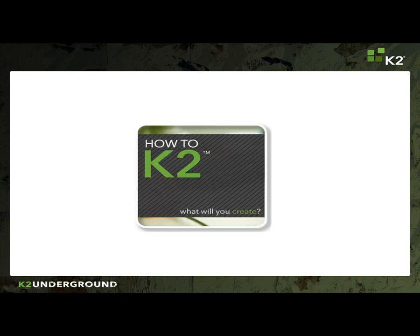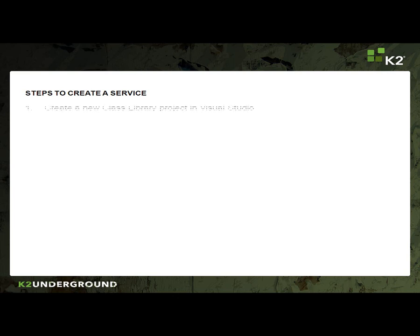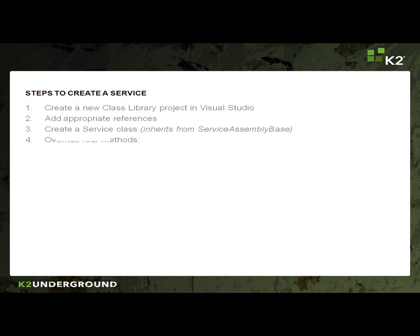So how do we create this service? To create a service, we simply create a new class library in Visual Studio, add the appropriate references, create a service class that will inherit from the service assembly base, and override four methods that are important for building out our service. They are describe schema, get config, execute, and extend. We will go into a little more detail on those in a moment.